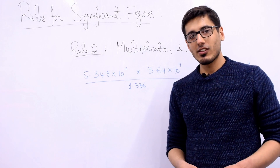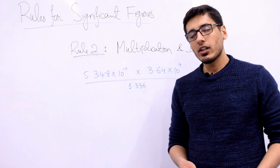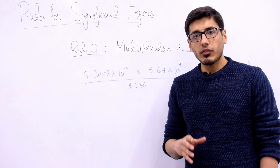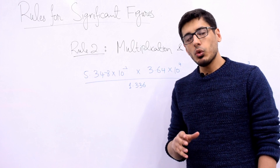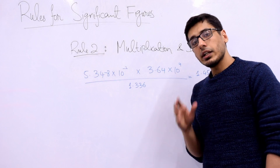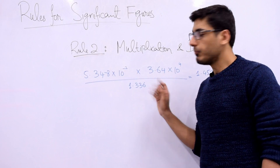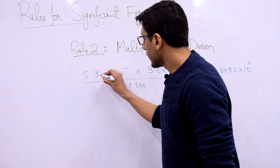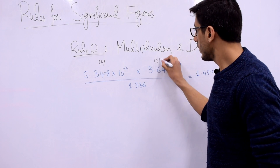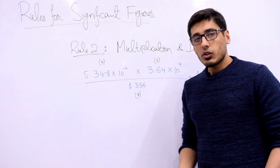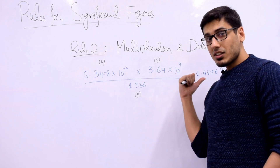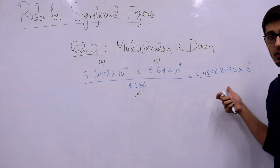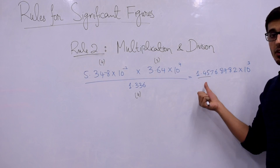There are two more rules. Rule 2 is for multiplication and division. The rule says the number of significant figures in your final result equals the least number of significant figures in any individual measurement in your expression. In this example, one measurement has 4 significant figures, another has 3, and another has 4. So the result shall have 3 significant figures. The calculator gives a long result, but you need to shrink it to only 3 significant figures using rounding off.